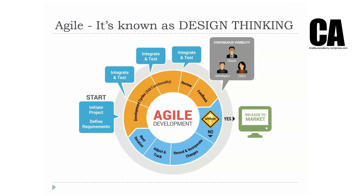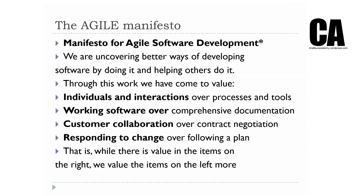Agile methodology has a thing called the agile manifesto. We're uncovering better ways of developing software by doing it and by helping others to do it. The manifesto values: individuals and interactions over processes and tools; working software over comprehensive documentation; customer collaboration over contract negotiation; responding to change over following a plan. All of these are of value, but the ones on the left-hand side are more important than the ones on the right.